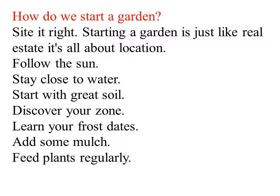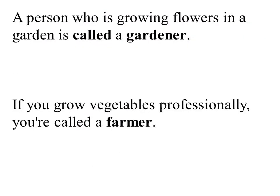How can we start a garden? First of all, we have to select the right place or right site where the soil is good for the plants. Starting a garden is just like real estate — it is all about location. That site must get good sunlight, and the land should be close to a water supply. Start with great soil. A person who grows flowers in a garden is called a gardener.